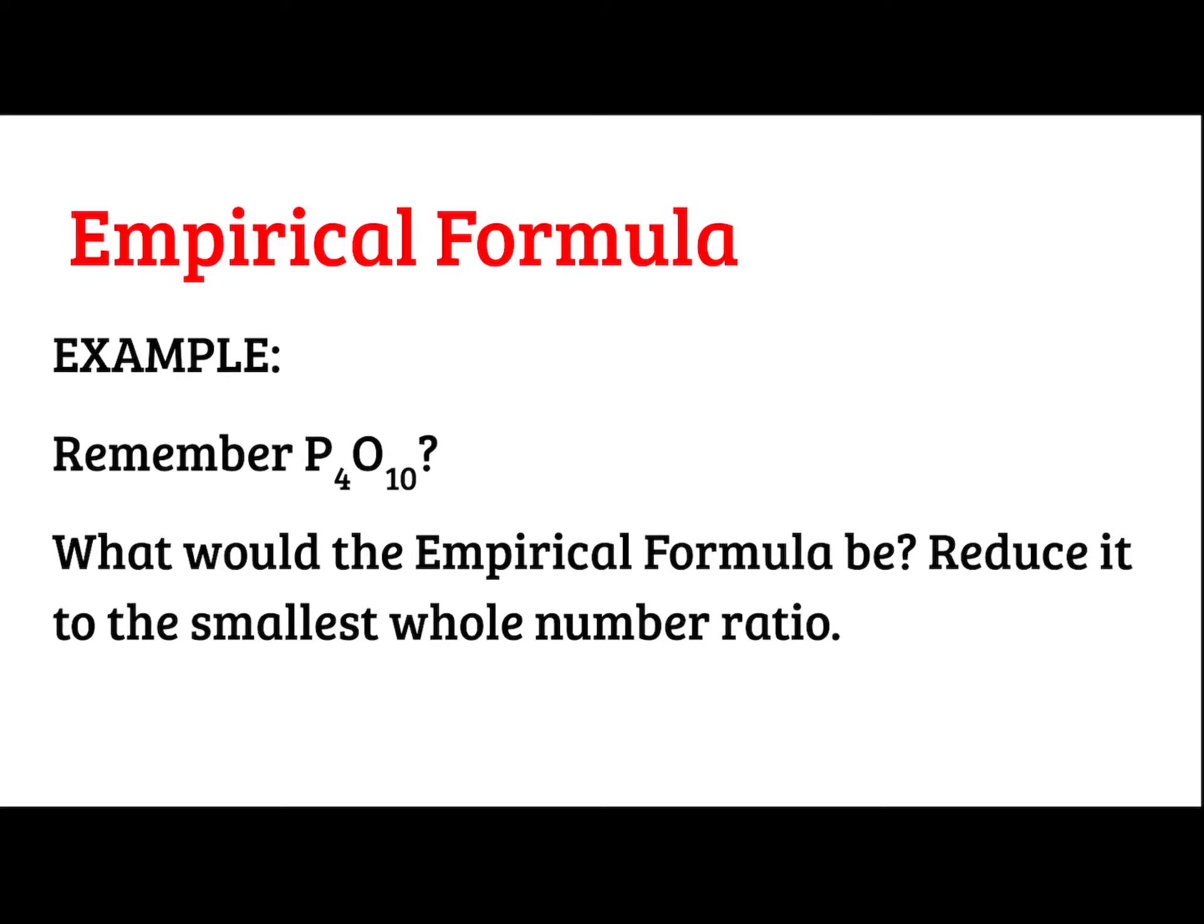An example, we'll use P4O10 again. So if we're trying to get the empirical formula, we just need to simplify this into the smallest whole number ratio. So if I just divide both by 2, I would get P2O5. So that would be my empirical formula.